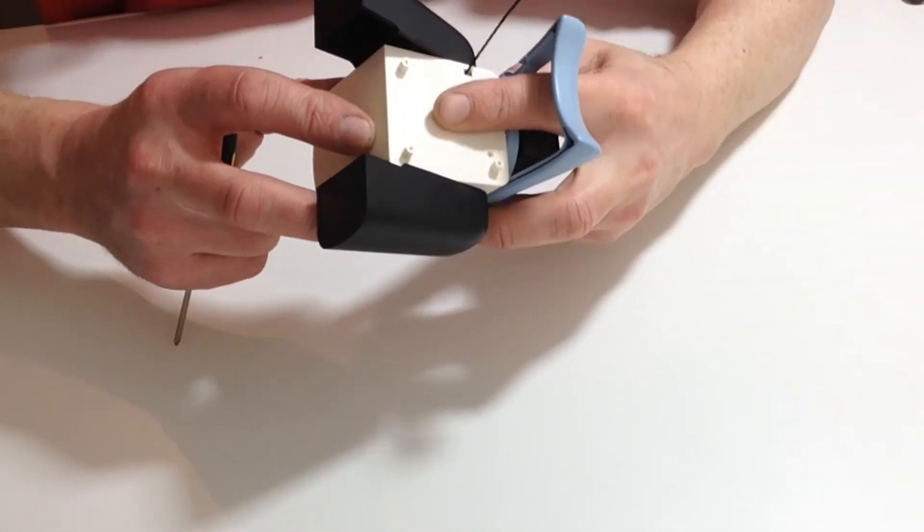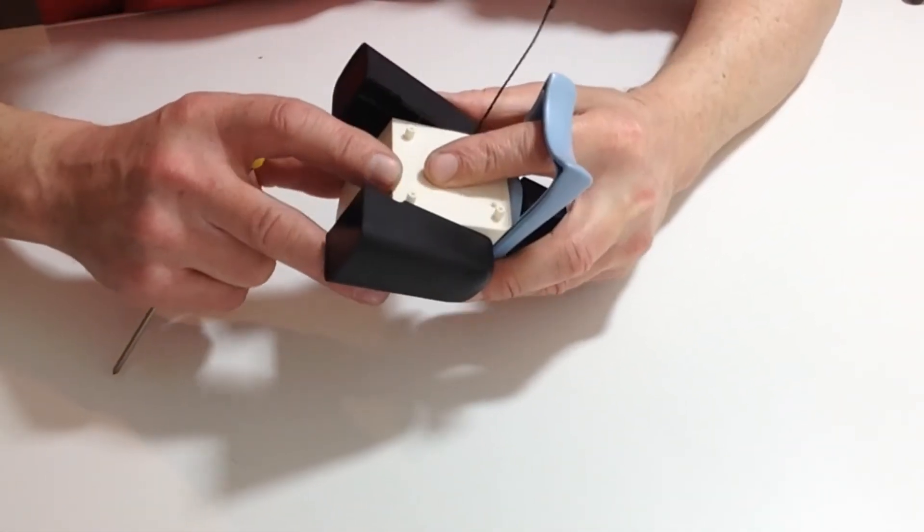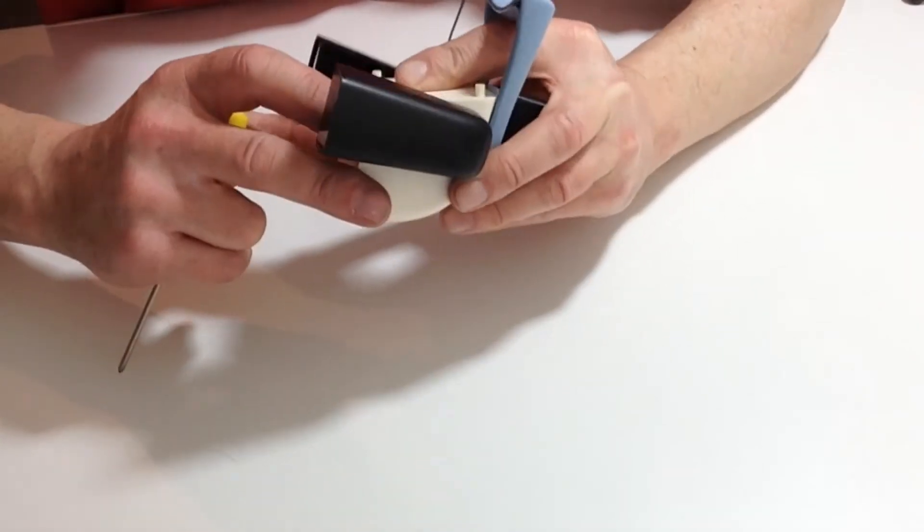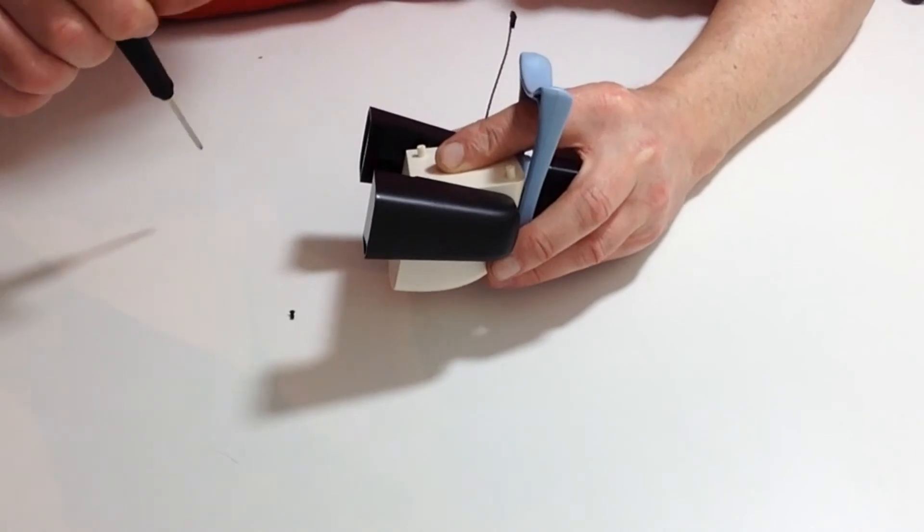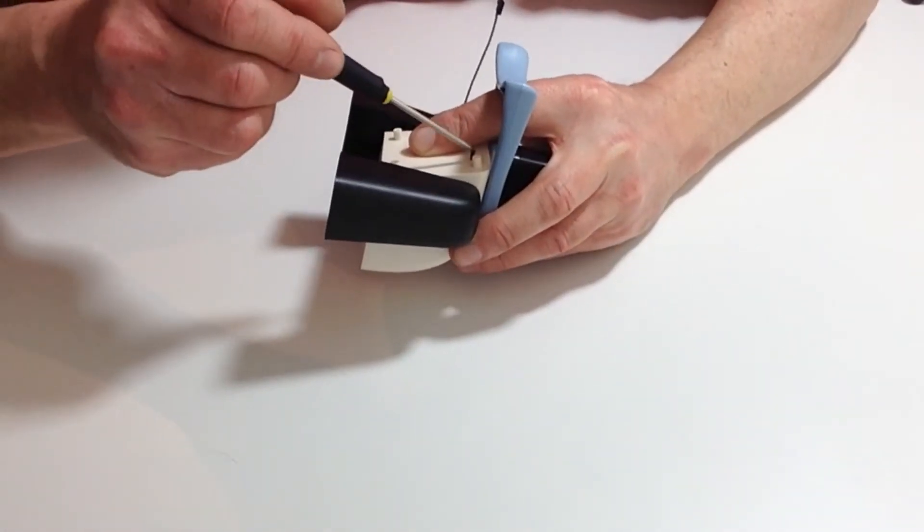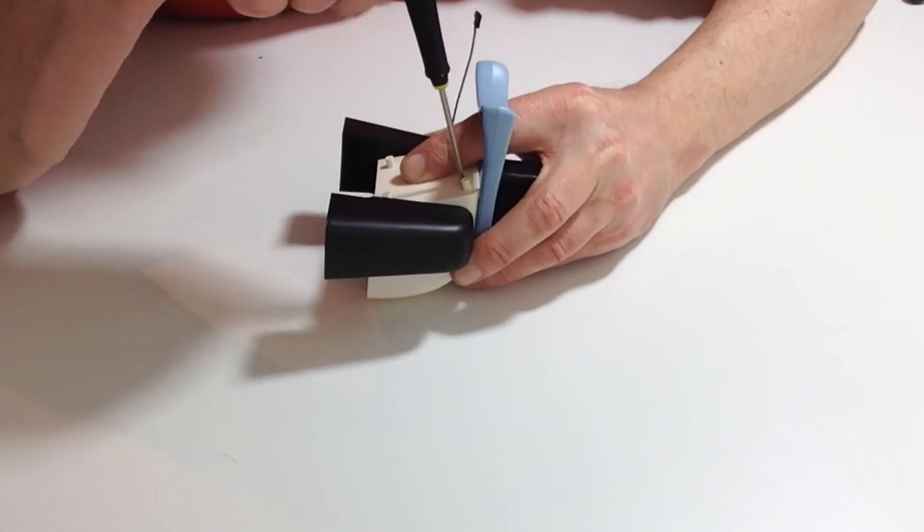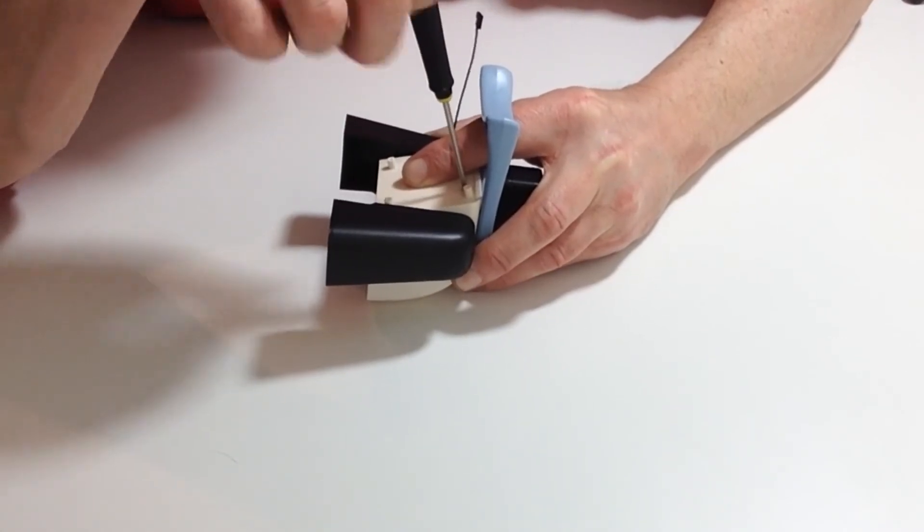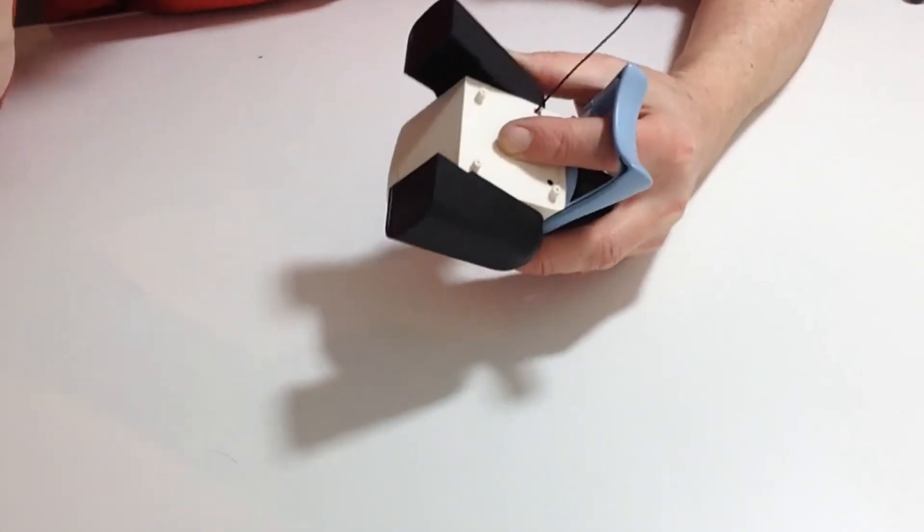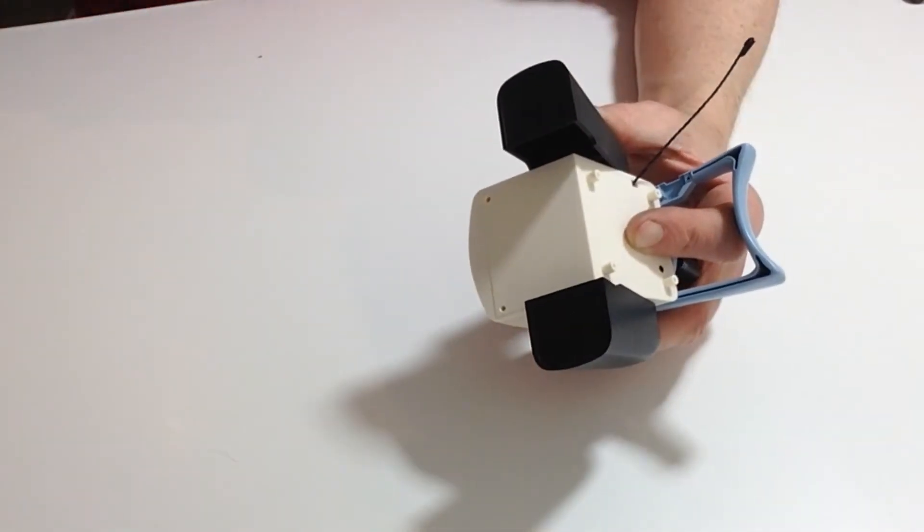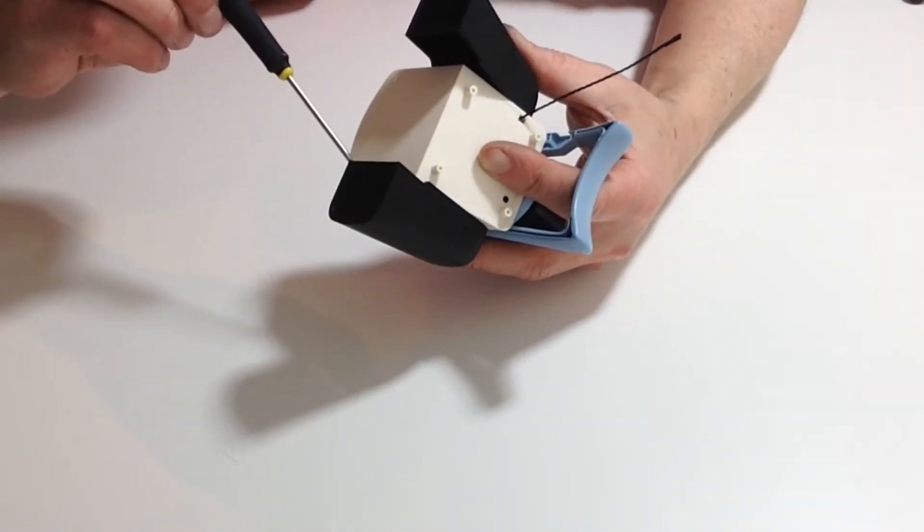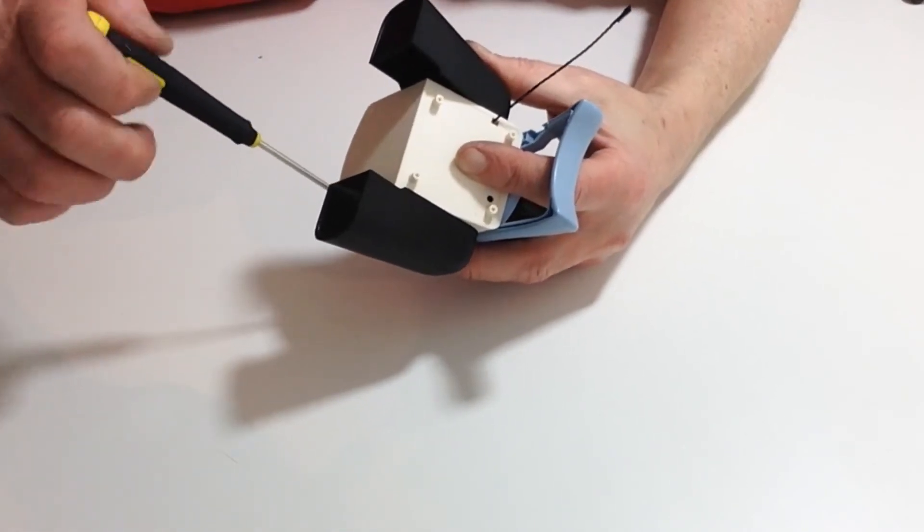Once again, with the M2 4.5mm countersunk screws that we have, screw those down, making sure that you've got two at the top and two at the bottom.